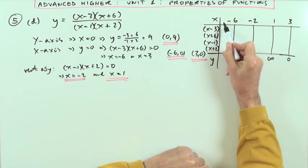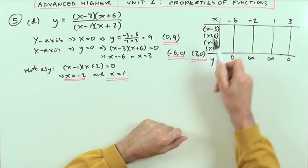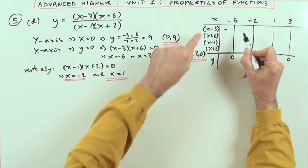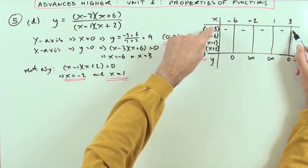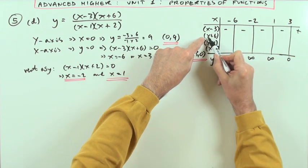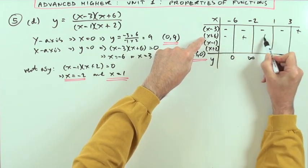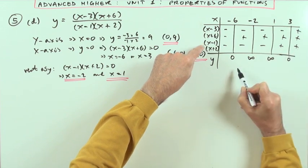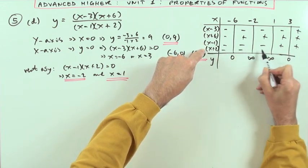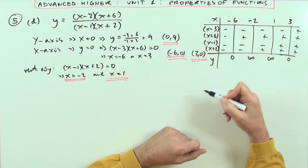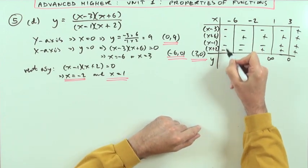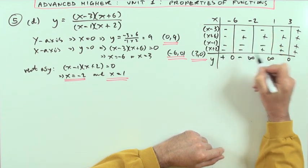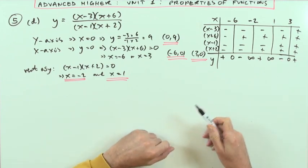Now consider what happens before, between, and after these critical numbers — I get that from the factors. At x equals three, that factor is zero; before three it's negative, after three it's positive. Same with negative six: before it's negative, after it's positive. At one: before it's negative, after it's positive. At negative two: before it's negative, after it's positive. Multiplying those four signs together — four negatives is positive, three negatives is negative, and so on — gives the sign of y in each region.